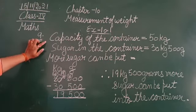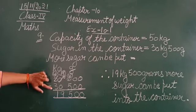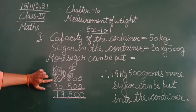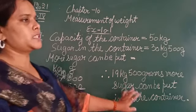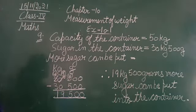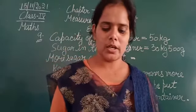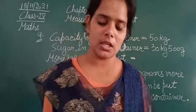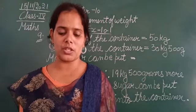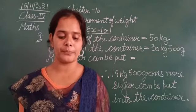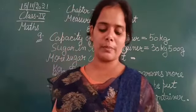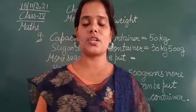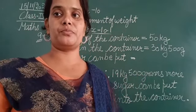So capacity of the container is equal to 50 kg, sugar in the container is 30 kg 500 grams. How much more sugar can be put into it? We subtract the quantity of sugar already in the container from the total capacity, and we got 19 kg 500 grams. So 19 kg 500 grams more sugar can be put into the container. This is the solution for question number 9. With this we have completed question number 9 and the word problems of chapter number 10. We will begin question number 10 in the next session. Till then, everybody have a great day — see you again. Thank you.